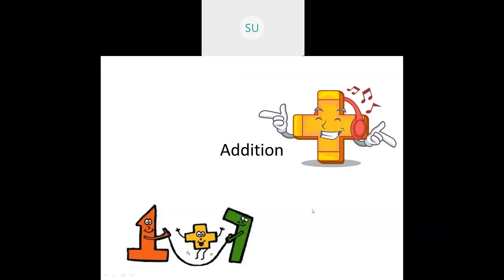Good morning students and welcome to today's maths class. In the previous class we did a quick revision on three digit numbers, and we completed that chapter. So today's class we'll start with the second chapter, that is addition. We'll learn a few methods which you've already learnt in first standard, revise them, do a few problems, and then move on to addition of two digit numbers.